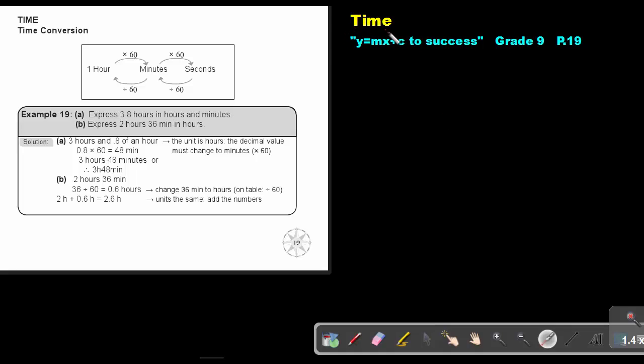Part 16. Time. You will find this on page 19 in the Namibia Mathematics Grade 9 textbook, Y equals MX plus C to success. Time conversion.